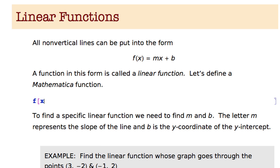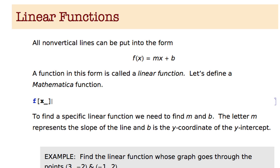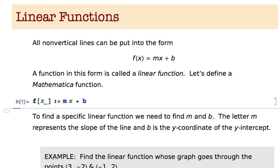I'm going to type f bracket x underscore — don't forget the underscore, it's very important. So the name of the function is f, then brackets, then x underscore because we're defining a function, colon equals, and then m space x — so m times x — plus b. Note that m, f, and b appear in blue letters because Mathematica doesn't know what they are yet. When I hit shift return, f changes to black because Mathematica now knows what f is, but m and b remain blue — which is correct. If m and b show in regular font color, you need to clear them.